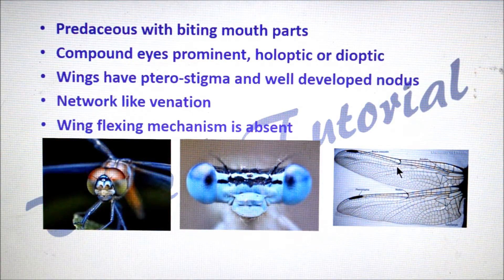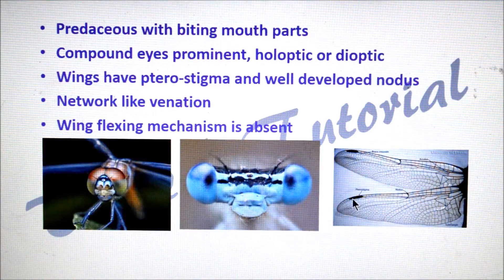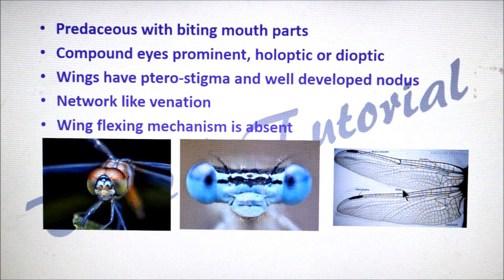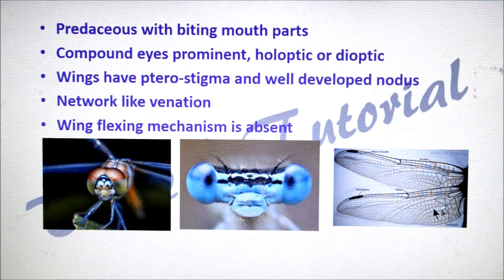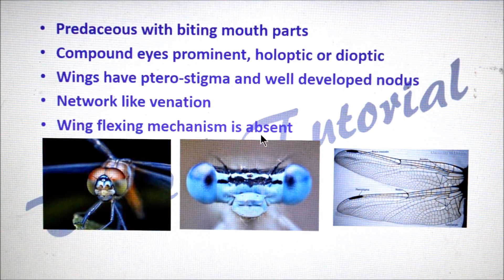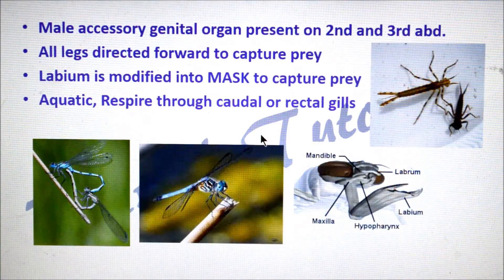If you look at the wing characters, pterostigma is present — that is a dark pigmented spot — and nodus is present. Network-like venation you can see here. Wing flexing mechanism is absent in Odonata.